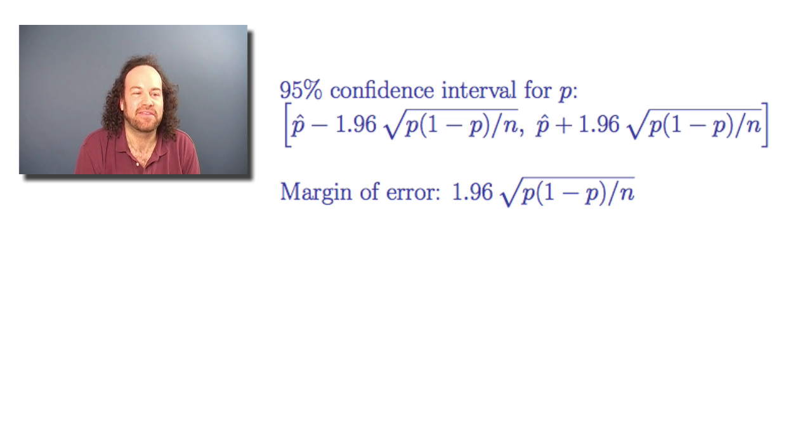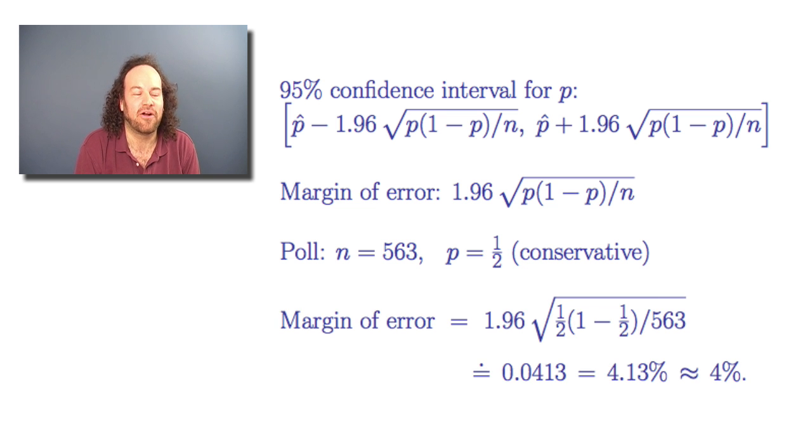And indeed, if we compute in this case, we can say the margin of error, when we stick in the conservative assumption that p is a half, then we compute the margin of error to be just a little bit more than 4%. So that's why that opinion poll said that the margin of error was plus or minus 4 percentage points. They meant that when you compute the half width of the 95% confidence interval, that it does indeed work out to be approximately 4%.